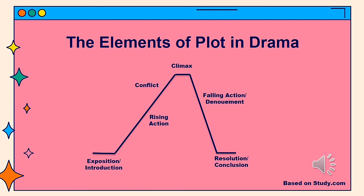Next is climax. Climax is the element of drama when the tension of the scenes builds to its highest point. Next is following action. It is the situation where the story is coming to an end. The last is resolution. It is the final outcome of the story — the conflicts are resolved and the story concludes.